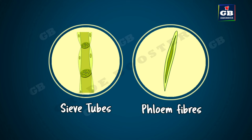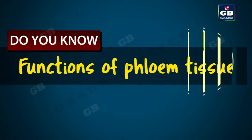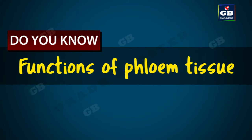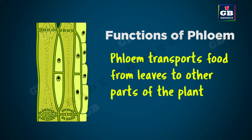Sieve tubes are tubular cells. Their cell walls are perforated. Phloem fibers are dead cells. The remaining phloem cells are living cells. Phloem transports food from leaves to other parts of the plant.